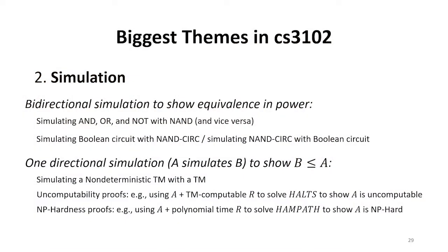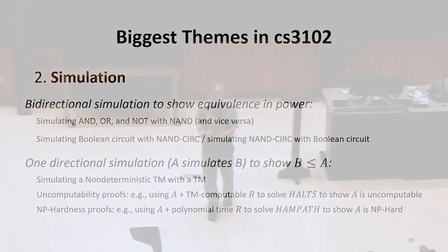We're able to simulate one kind of machine with another machine. We're able to solve one problem with another problem. All of these are kind of variations on the same idea of simulation as a way of showing equivalence or showing that one thing is more powerful than another.